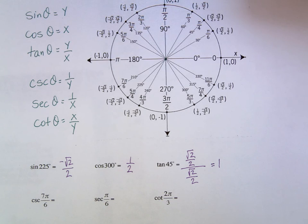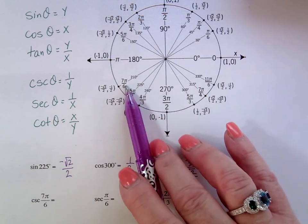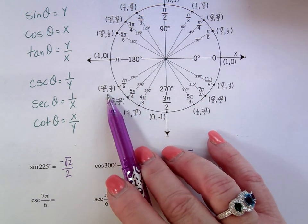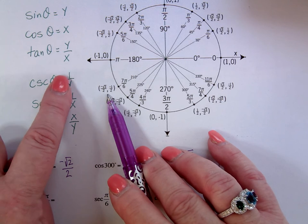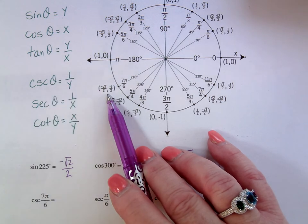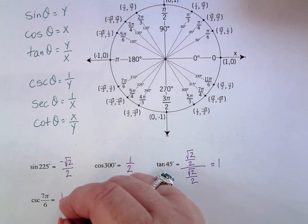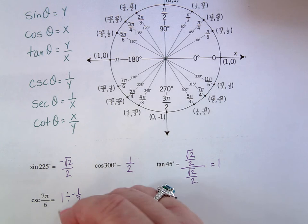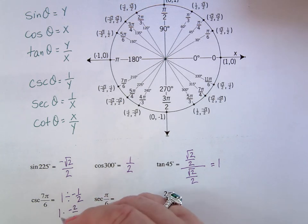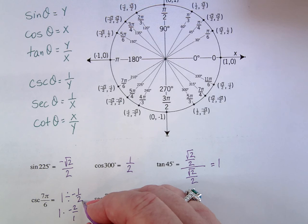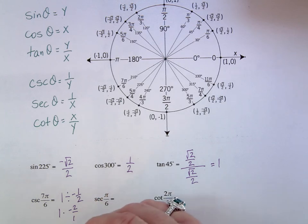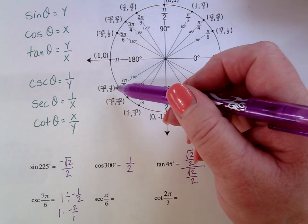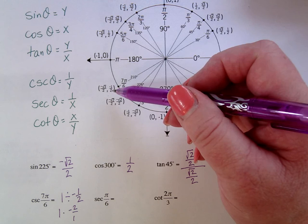In pi language: for secant of 7π over 6, go to that coordinate and take 1 divided by the y value. The y value is negative 1 half, so 1 divided by negative 1 half — multiply by the reciprocal — gives negative 2 over 1, or negative 2. Reciprocal of negative 1 half is negative 2, so it all fits together.